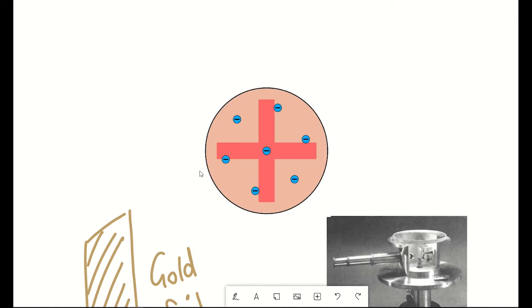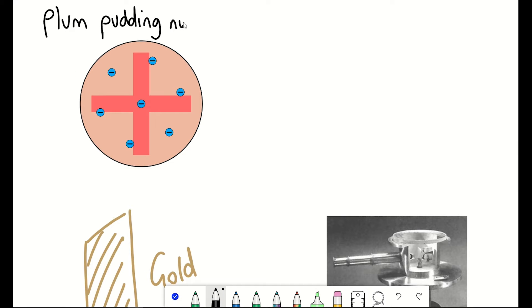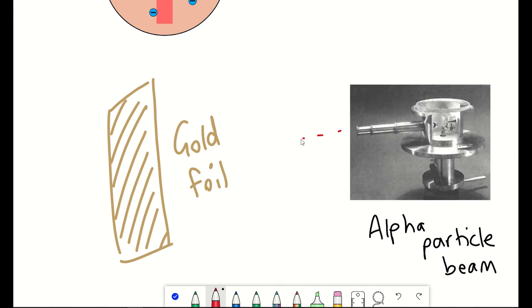based on the current plum pudding model of the atom, was that the beam would all pass through, like if you threw a dart at some tissue paper.